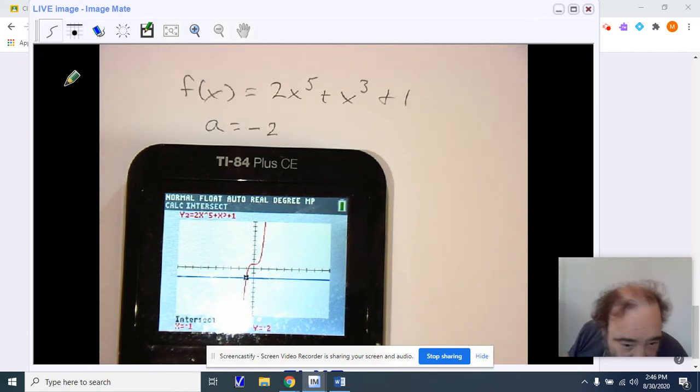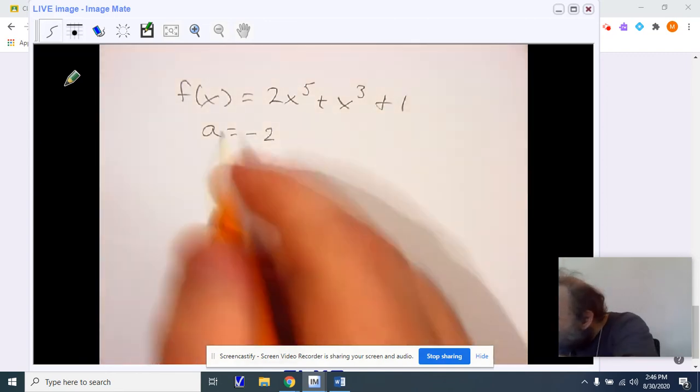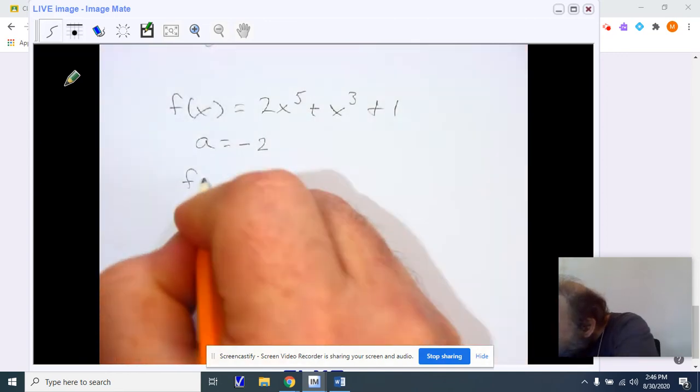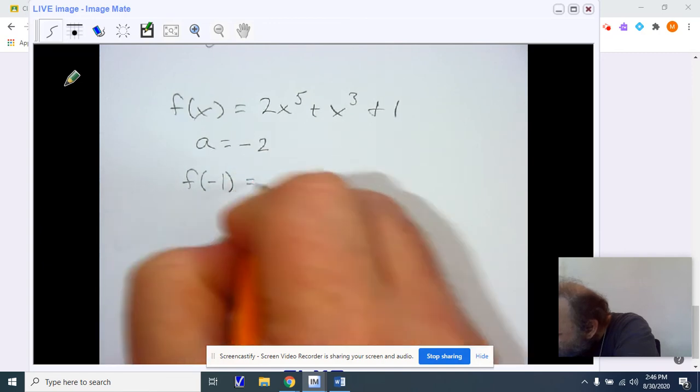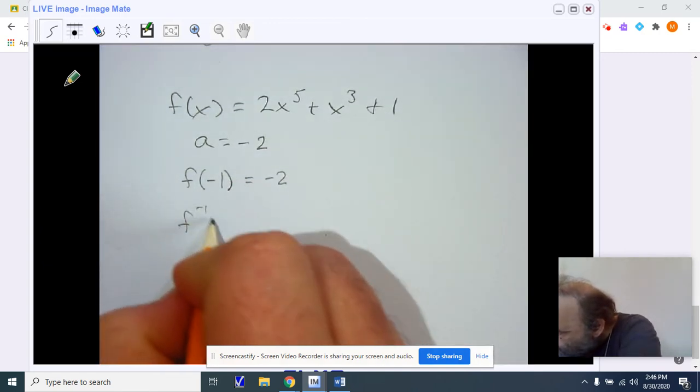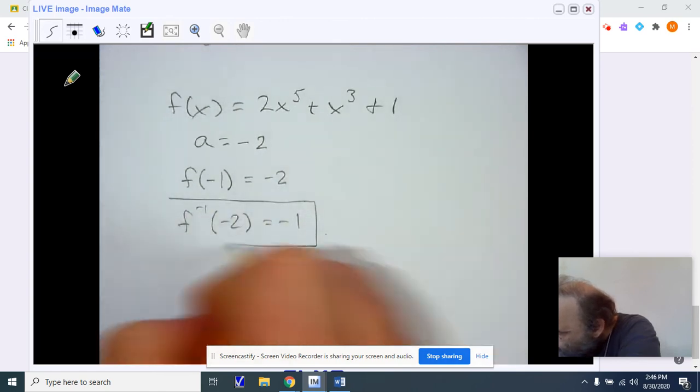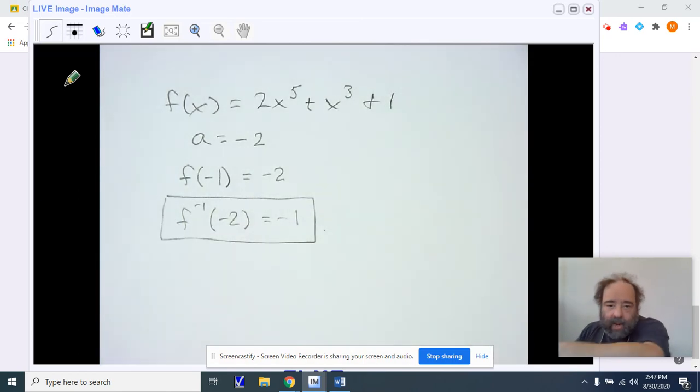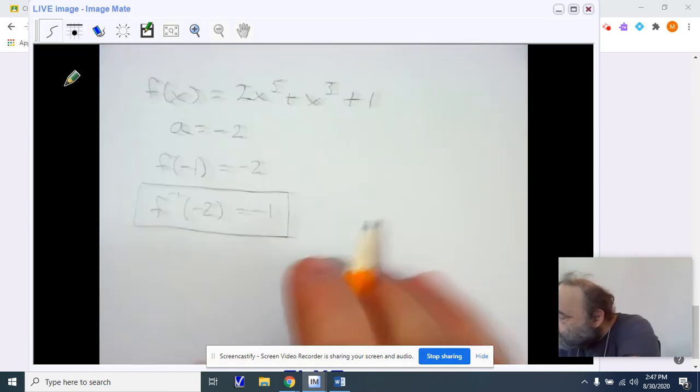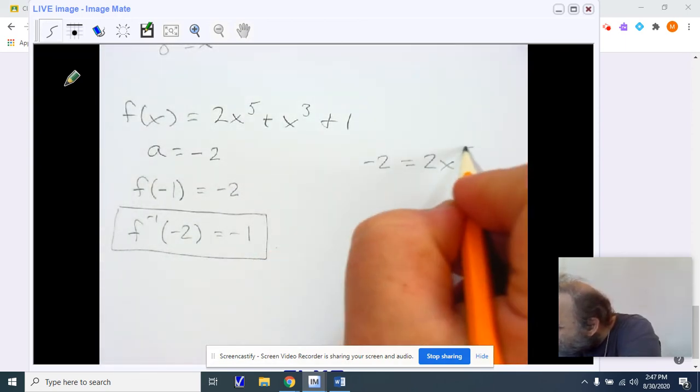The value we get is negative 1, negative 2. That means that f of negative 1 gave me negative 2. Our inverse is therefore f inverse of negative 2 equals negative 1. This is what we're locating. Notice our goal is to try to figure out what value of x will give us negative 2.